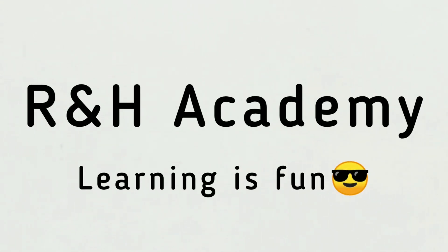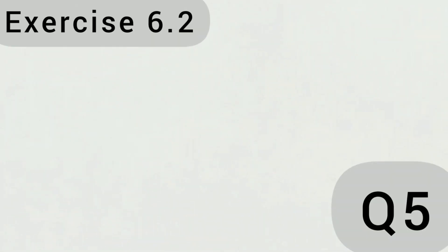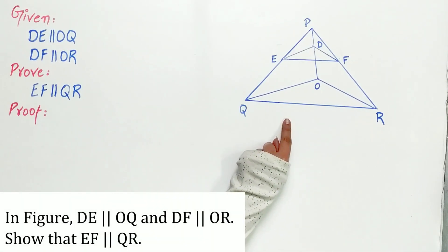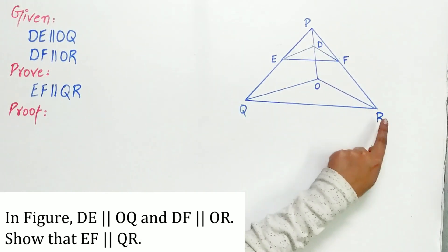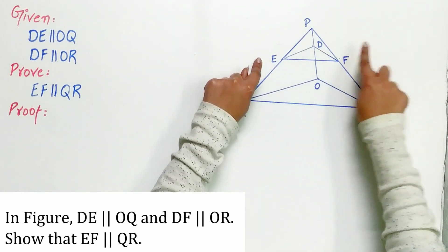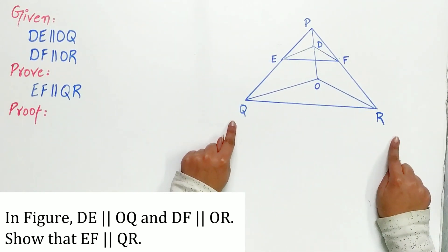Welcome to R&H Academy channel. Question 5 of exercise 6.2 says, in figure, DE is parallel to OQ and DF is parallel to OR. We have to show that EF is parallel to QR.